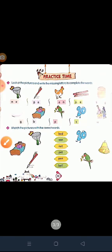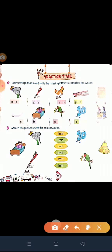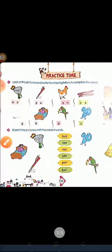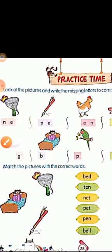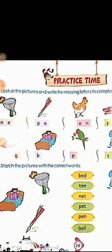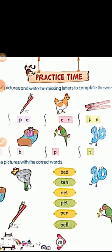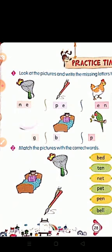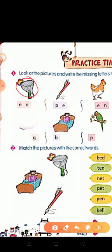Good. Next, you have an exercise here and you have to complete the work in your book. Look at the pictures and write the missing letters to complete the words. Your first picture is net. Net's spelling we have already learned. N, E, T, net.